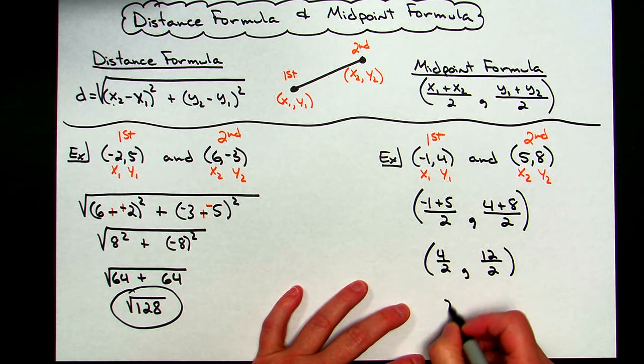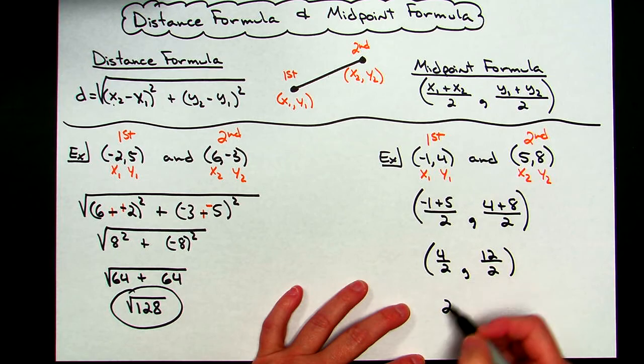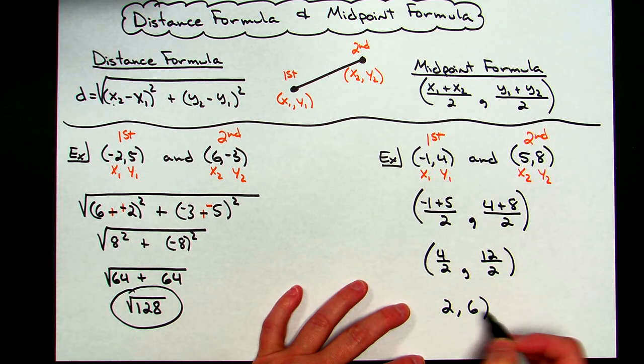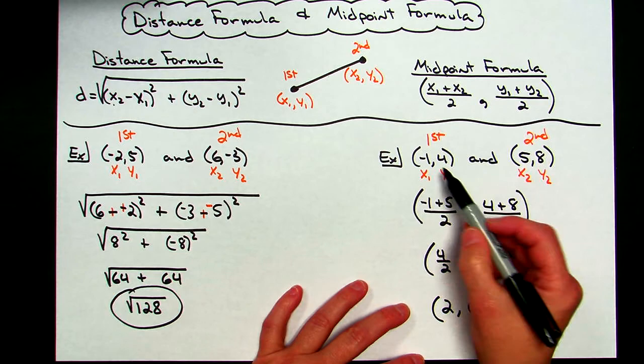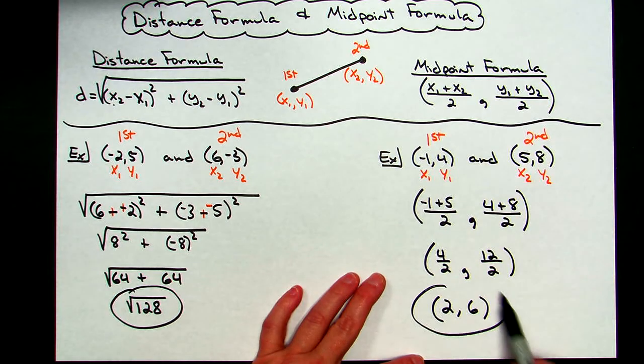These turned out to be whole numbers, they do not always have to be whole numbers. 4 divided by 2 is 2, 12 divided by 2 is 6. So the midpoint in between those two points would be the point 2,6.